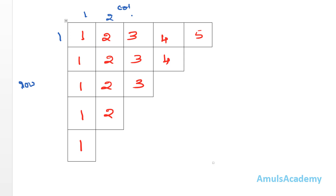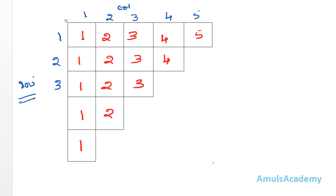At row 1 we check for column 1, column 2, column 3, column 4, column 5. After printing that row we move to the next row and check for columns 1 through 4, then row 3 for columns 1 through 3, and so on. So first we write the for loop for the row, and inside that we write the for loop for the column.